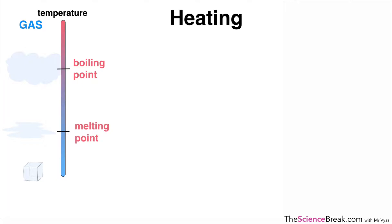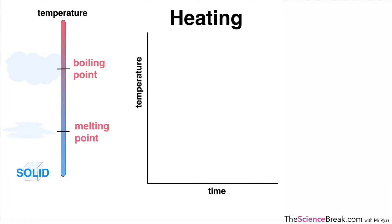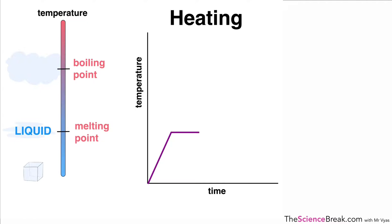We can look at a sketch graph of temperature versus time — no units, just to illustrate the changes. If we have a solid at a very low temperature and warm it up, at its melting point it changes into a liquid. The temperature remains the same until all of the solid has turned into liquid, and only then does the temperature begin to rise again.